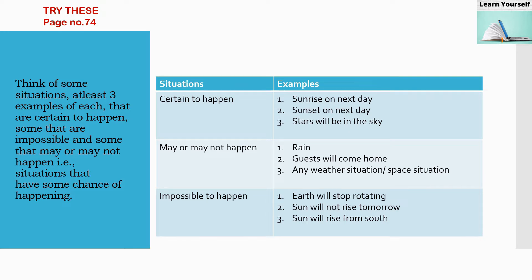Think of some situations, at least three examples of each, that are certain to happen, some that are impossible, and some that may or may not happen. That is, situations that have some chance of happening. So we have here three situations.